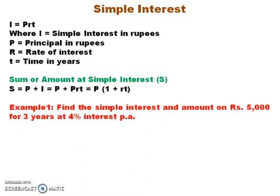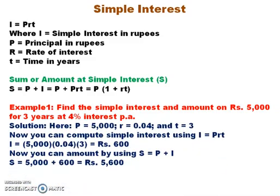Let us take an example. Find the simple interest and amount on rupees 5000 for 3 years at 4% interest per annum. Here, P equals 5000, R is 4% which equals 0.04, and T equals 3. Using I equals PRT, I equals 5000 into 0.04 into 3, that comes to rupees 600.